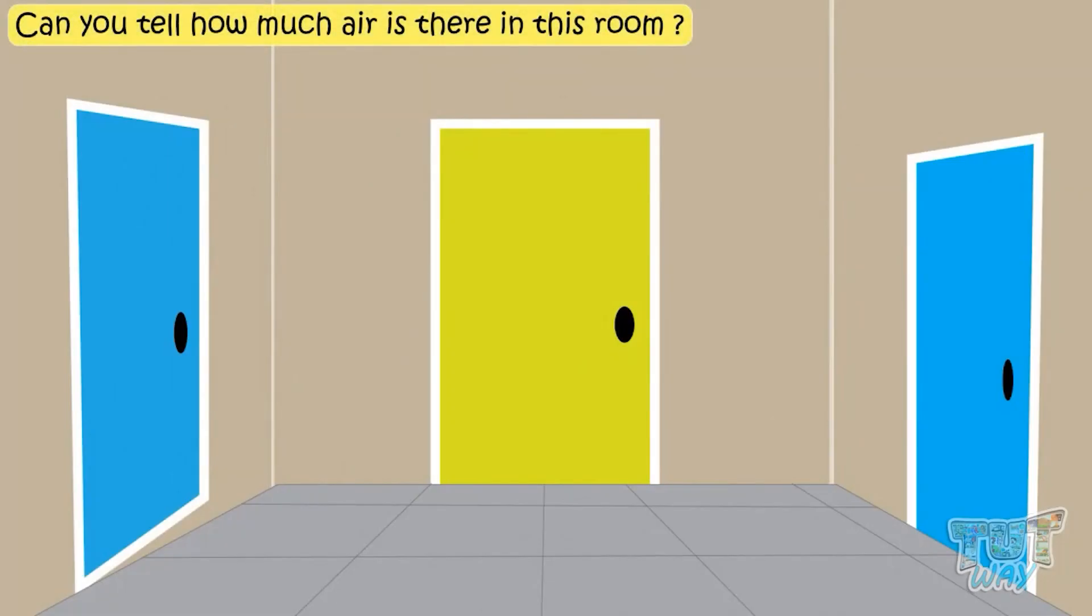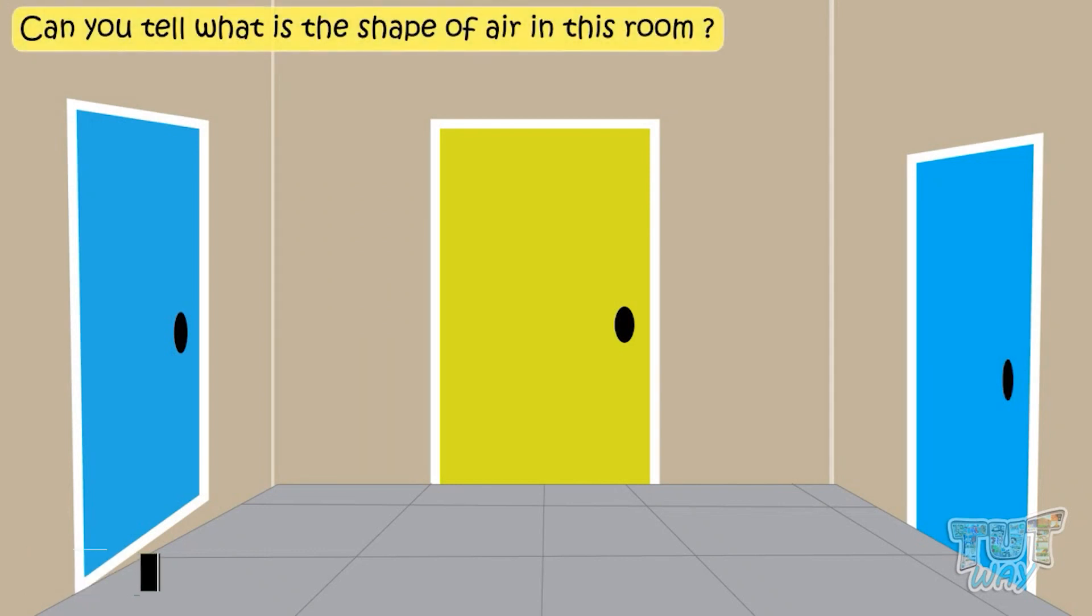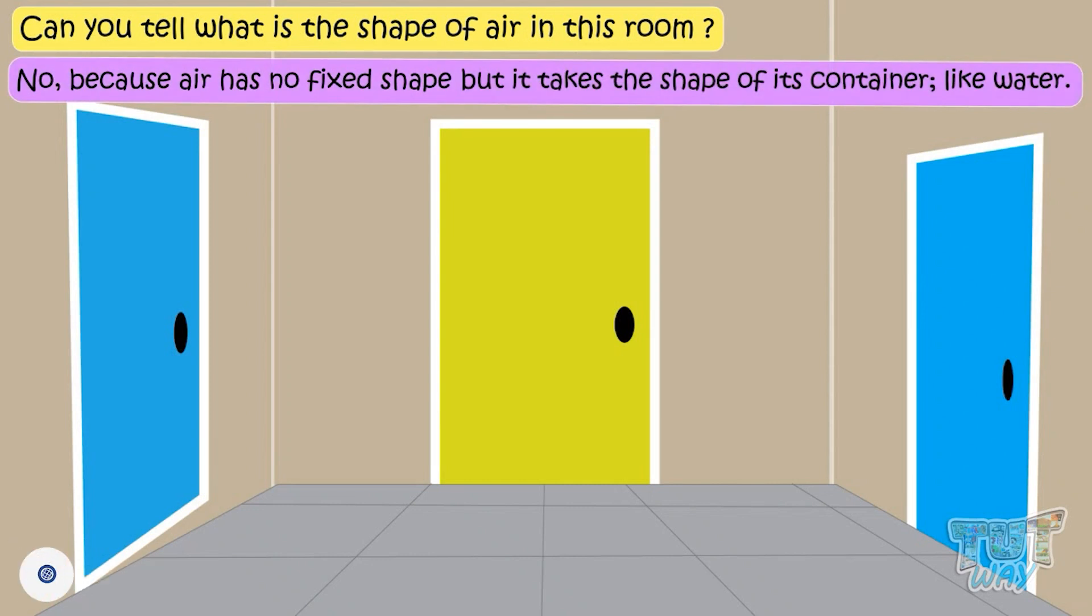Kids, can you tell how much air is there in this room? No, because air has no fixed volume. Now, can you tell what is the shape of air in this room? No, air has no fixed shape, but it takes the shape of its container, like water.